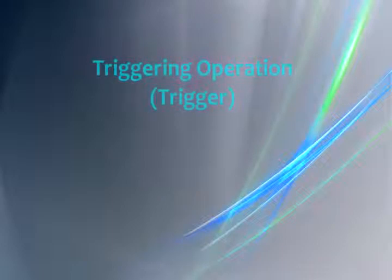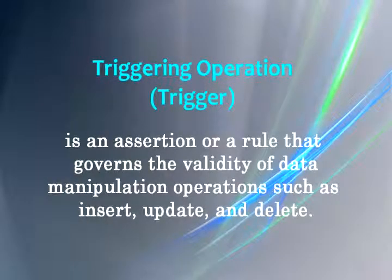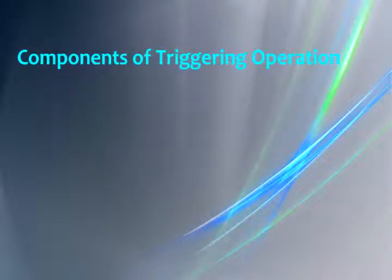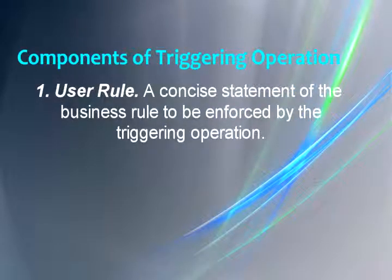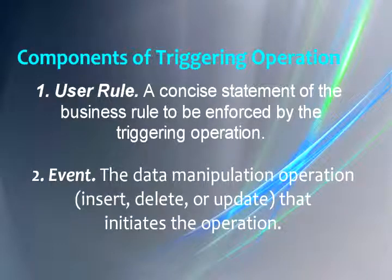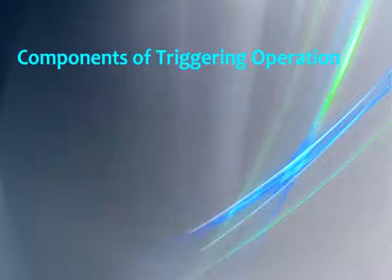On the other hand, a triggering operation, or trigger, is an assertion or rule that governs the validity of data manipulation operations such as insert, update, and delete. A triggering operation normally includes the following components. First, user rule: a concise statement of a business rule to be enforced by the triggering operation. Second, event: the data manipulation operation — insert, delete, or update — that initiates the operation.